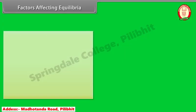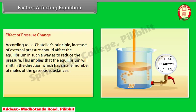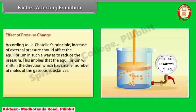Effect of pressure change: according to Le Chatelier's principle, an increase in external pressure should affect the equilibrium in such a way as to reduce the pressure. This implies that the equilibrium will shift in the direction that has a smaller number of moles of gaseous substances. If we increase the pressure, the volume occupied by the system decreases and the number of molecules per unit volume increases. This effect can be counterbalanced if the equilibrium shifts in the direction involving fewer moles, so an increase in pressure will favor the forward reaction.